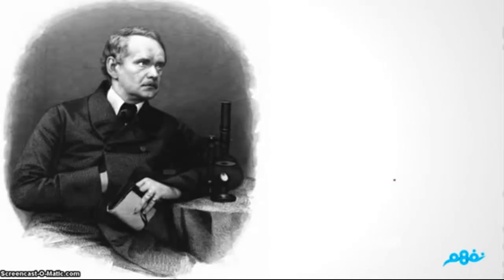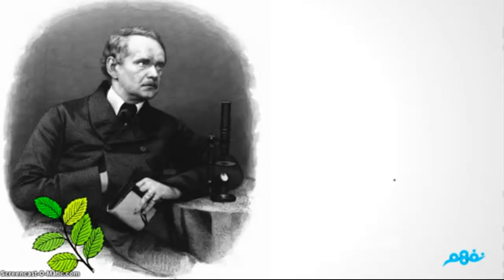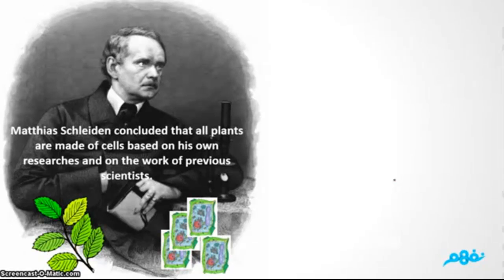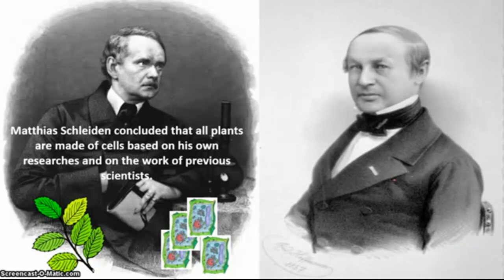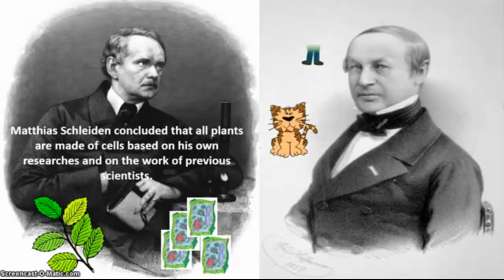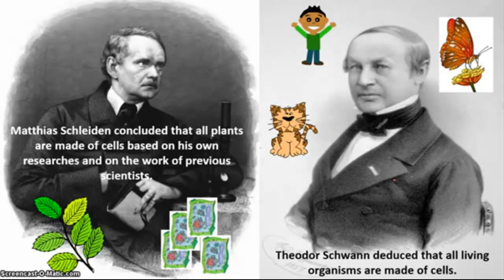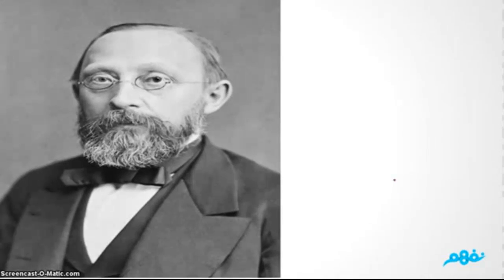Next is Matthias Schleiden, whose work was about plants. He found out that all plants are made of cells. Then we have Theodor Schwann, whose work was also about cells but for all living organisms. He concluded, using his work and the works of others, that all living things are made of cells — making one big point in the cell theory.